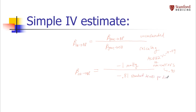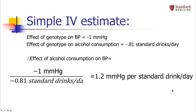Notice that now we are in the correct units — this is the change in blood pressure per change in standard drinks per day. When you actually divide this out, you get that the effect of alcohol on blood pressure is an increase of 1.2 millimeters of mercury in blood pressure per one standard drink per day. So alcohol actually increases your blood pressure.